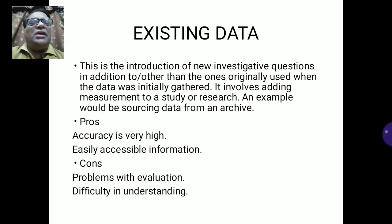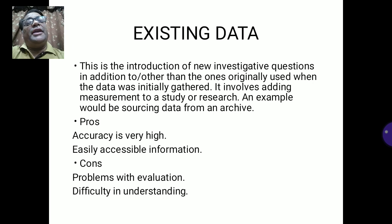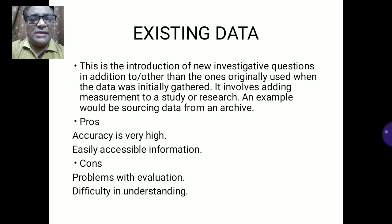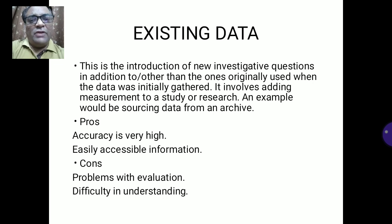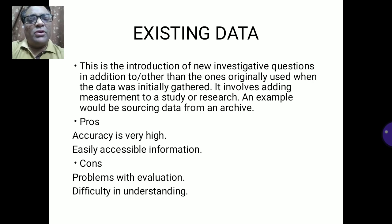Existing data involves checking not only history but other journals and archives. Research accuracy is very high because prior research has already been done, so we can trust it and access it easily, though sometimes there can be problems with outdated or incomplete existing data.